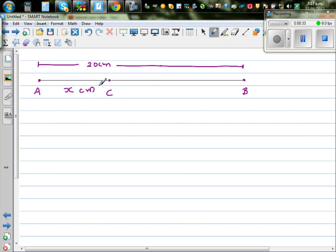So if this is x centimeters, what is the length from B to C? Well, if the length from A to B is 20, and the length from A to C is x centimeters, the length of B to C or C to B would be 20 minus x. So I hope you understand this. Let us write this.